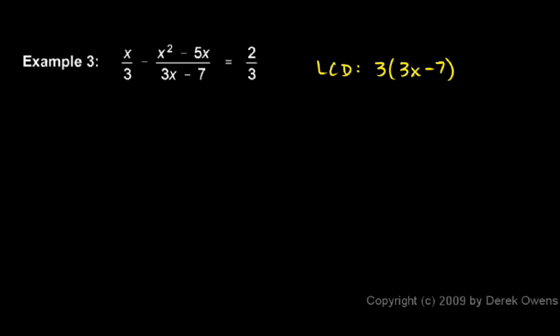So I'll rewrite the original problem here. x over 3 minus x squared minus 5x over 3x minus 7 equals 2 thirds. And now I'll multiply both sides by this, 3 times 3x minus 7.